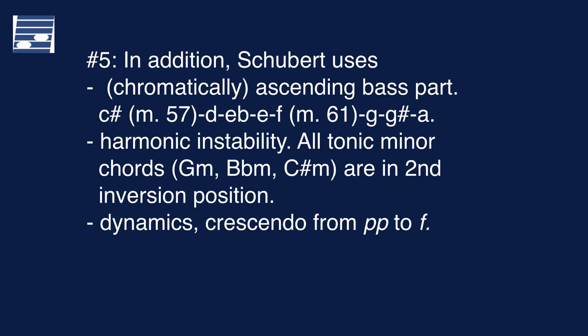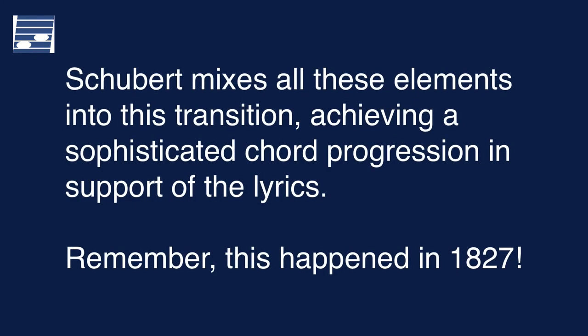Additional elements contribute to the musical effect and underline the road of no return lyrics in the transition. There is a long ascending bass part with mostly chromatic steps. Another twist is the use of three tonic minor chords in the unstable second inversion position. And finally, there is the dynamics, getting louder from pianissimo to a forte climax near the end. Schubert mixes these ingredients to create this unique 11-measure chord progression with great sophistication and in full support of the lyrics.